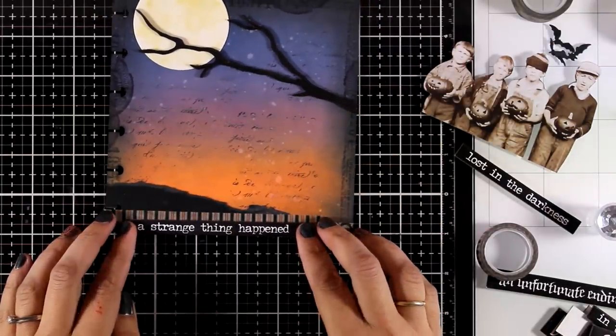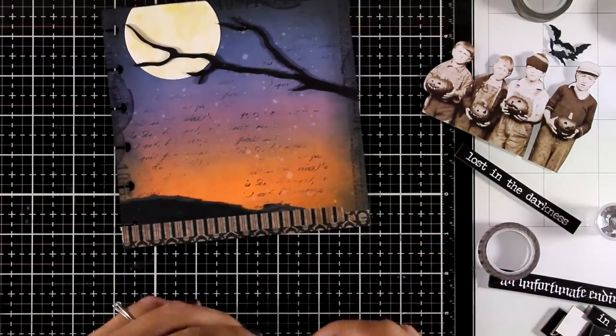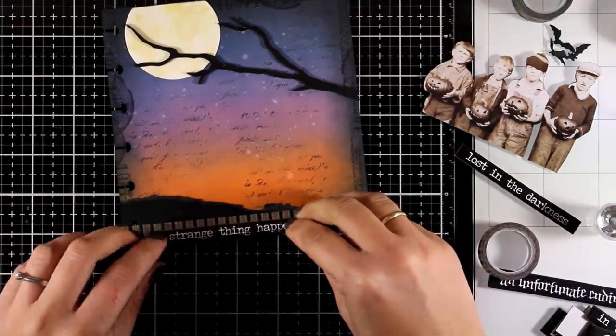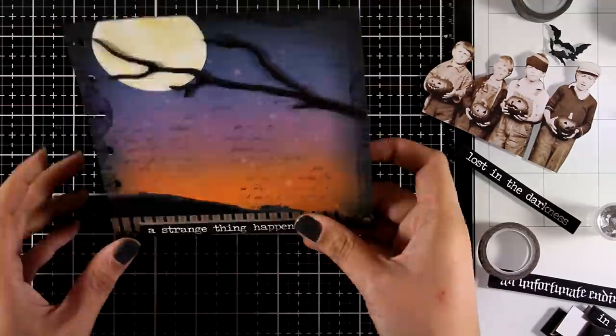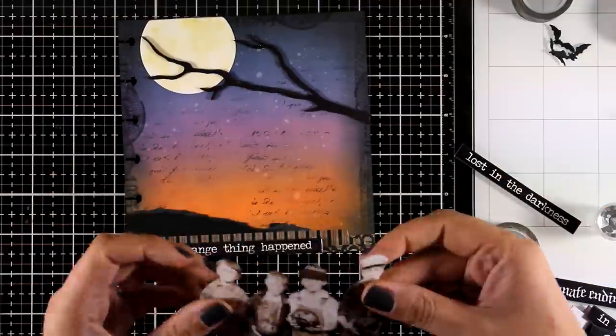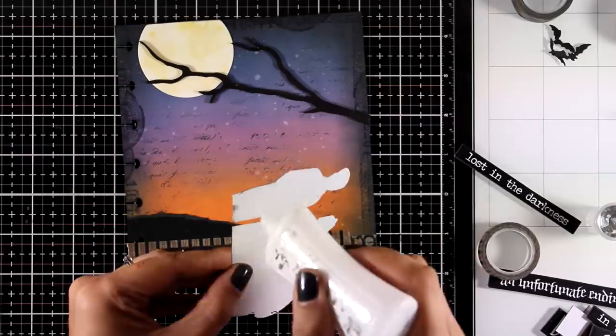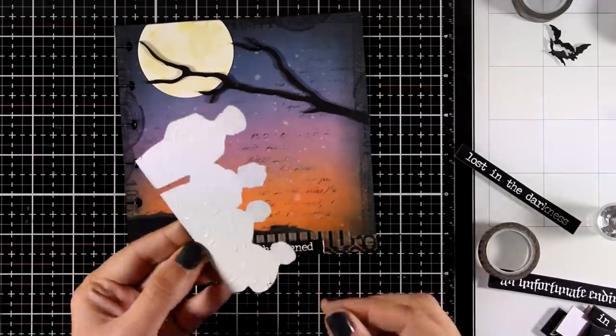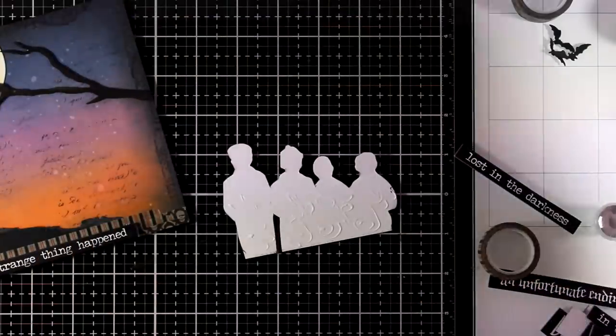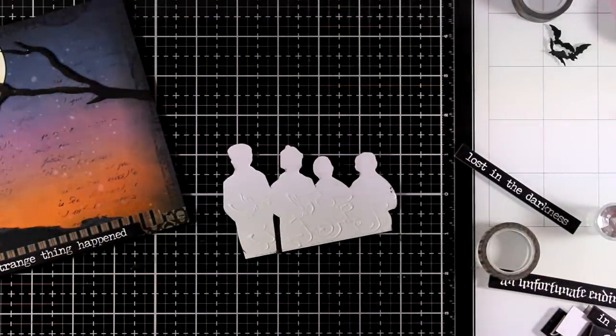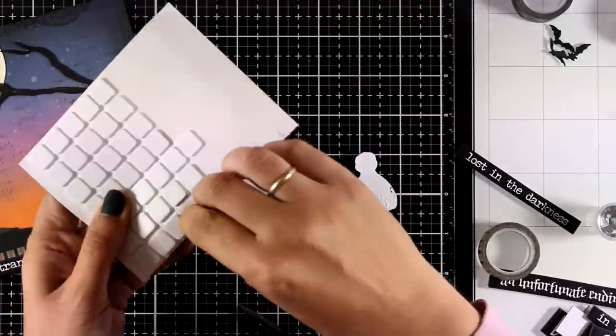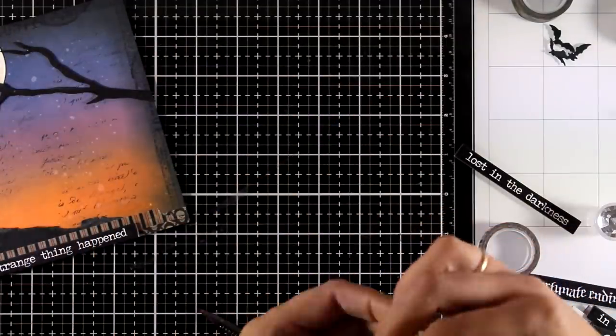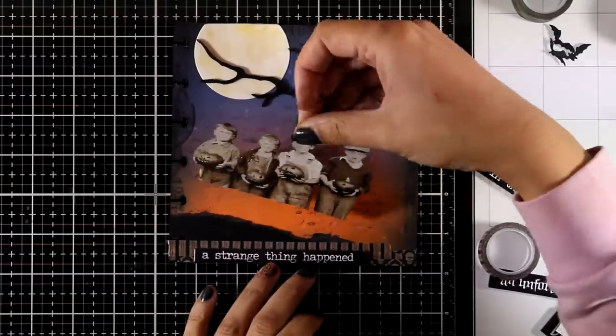Again for my quote today I will be using chit chat stickers by Tim Holtz and this is the Halloween package. There are so many different ones to choose from and I'm going to stick one of them at the bottom. Now it's time to stick the boys down. I'm using white glue at the bottom of this cutout since I wanted to lay flat on my page, but for the heads I'm going to use some foam squares at the back. This way I will have some dimension only where the heads are.